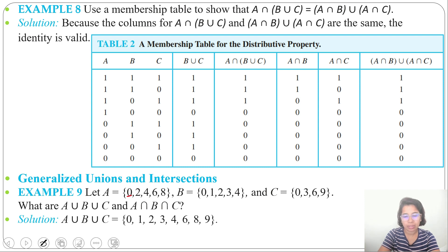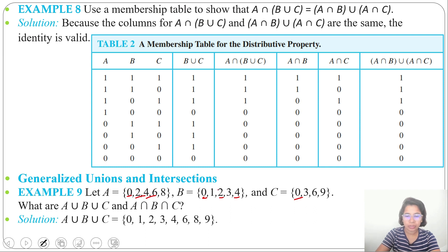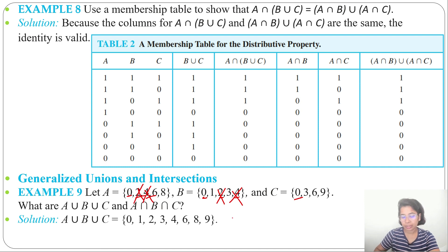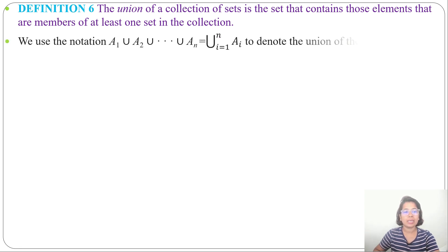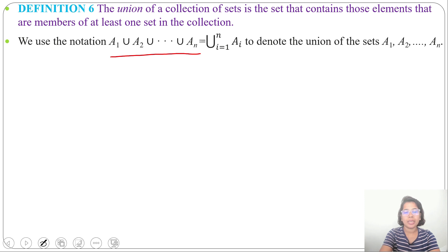For A ∩ B ∩ C, we check which elements are common in all sets. First A and B: 0, 2, 4 are common. Then checking with C: 0 is common, but 2 and 4 are absent in C. So A ∩ B ∩ C = {0} — only 0 is common in all three sets. Next, Definition 6: the union of a collection of sets contains elements that are members of at least one set.